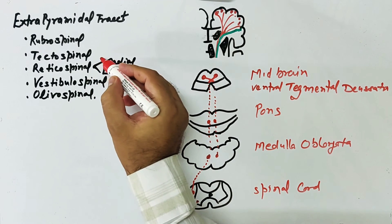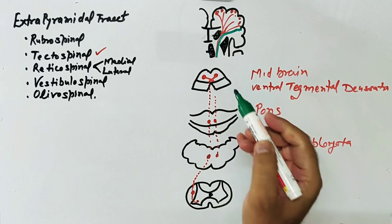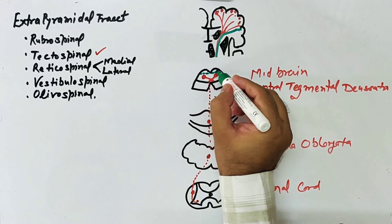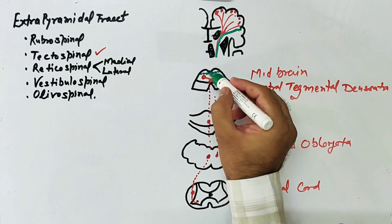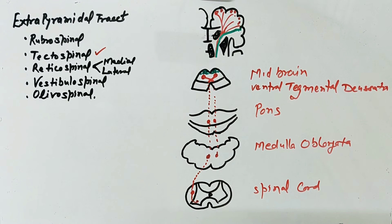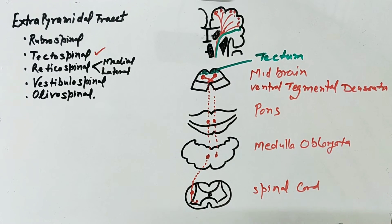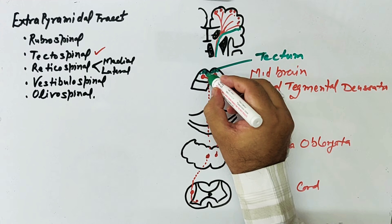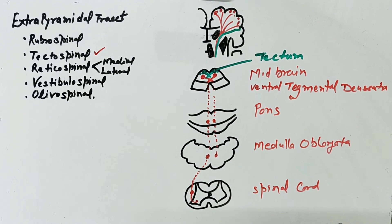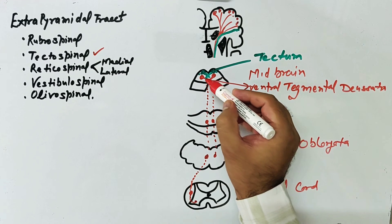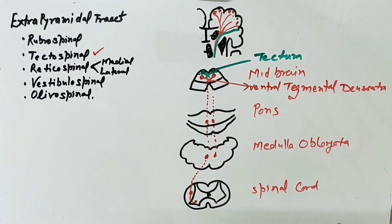The next tract is the tectospinal tract. Fibers arise from the tectum — this is the midbrain; this posterior part is the tectum, and this part is the tegmentum. The tectum is where the superior colliculus and inferior colliculus are present. From here, fibers cross and go to the opposite side via the dorsal tegmental decussation. So you have seen the ventral tegmental decussation for the rubrospinal tract, and here is the dorsal tegmental decussation for the tectospinal fibers.